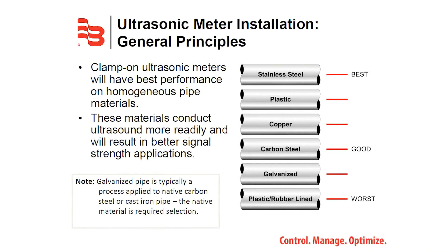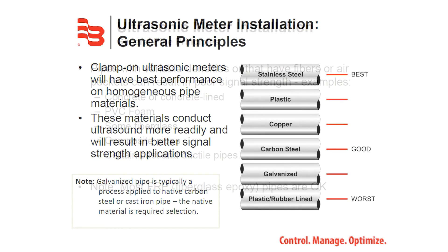General installation principles: clamp-on ultrasonic meters will have best performance on homogeneous pipe materials. These materials conduct ultrasound more readily and will result in better signal strength. Applications in order from best suited to worst suited — the best pipe materials are stainless steel, plastic, copper, carbon steel, and galvanized plastic with rubber lining.